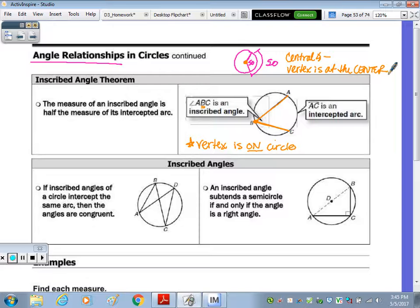Okay, the arc that's intercepted is still between the two rays that form the angle. So AC is the intercepted arc, and it says the measure of an inscribed angle is half. So it's not the same, it's half. So if this arc AC, let's say it was 100 degrees. Half of 100 is 50, so that means the angle ABC is 50 degrees.